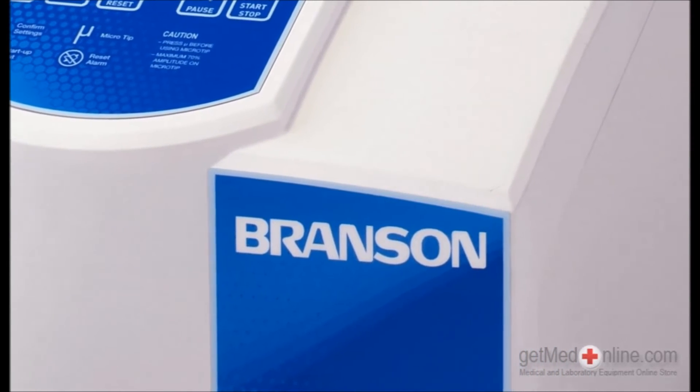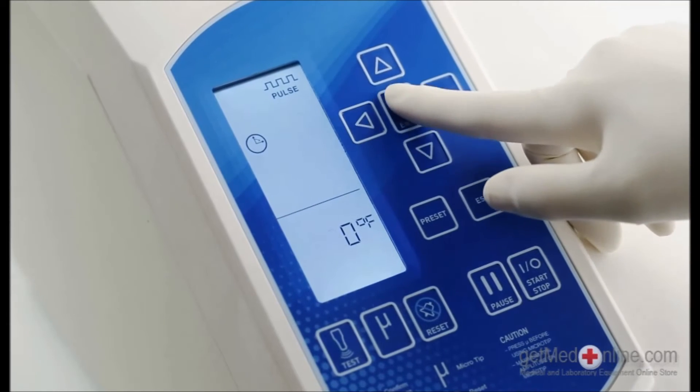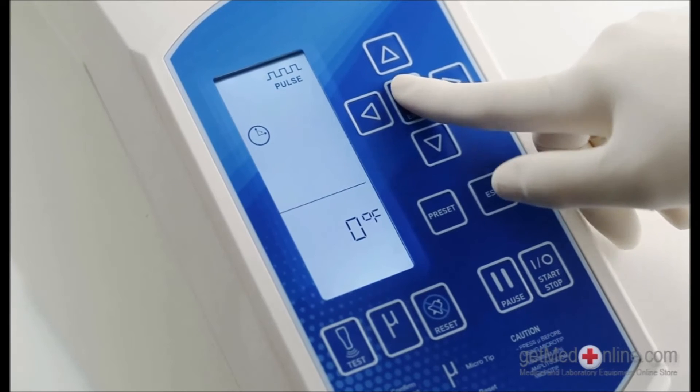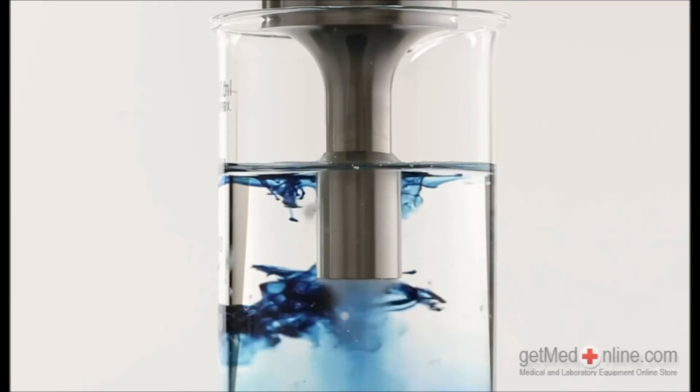And you can specify a temperature range for processing your sample. Once the lower temperature limit is reached, Branson's True Temperature Control automatically modulates the pulse to prevent the sample from exceeding the maximum limit. True Temperature Control is another exclusive Branson feature to ensure consistent, predictable results.